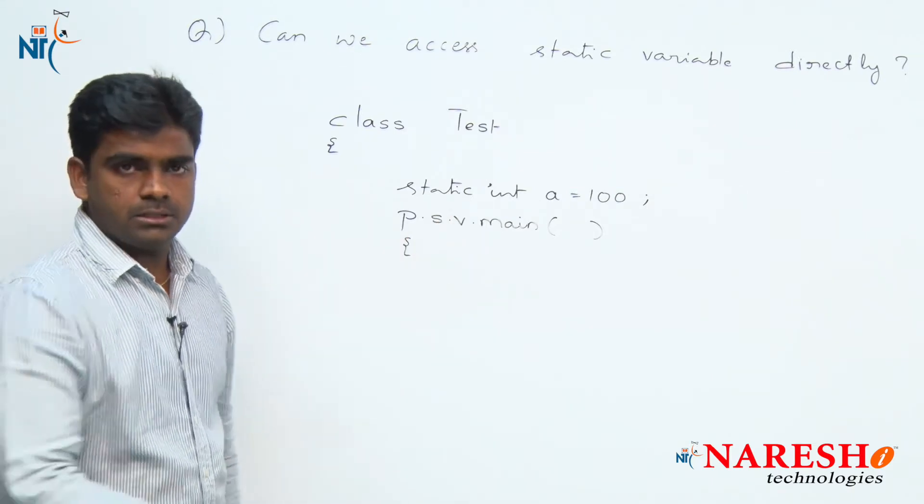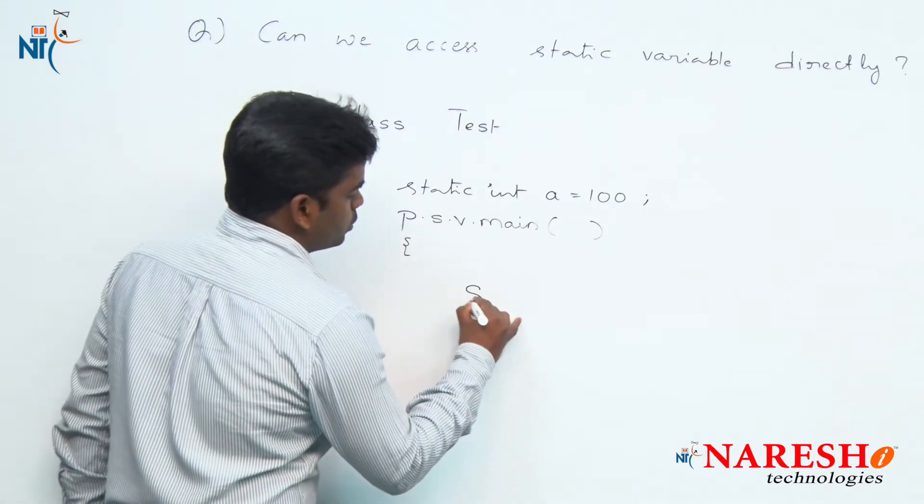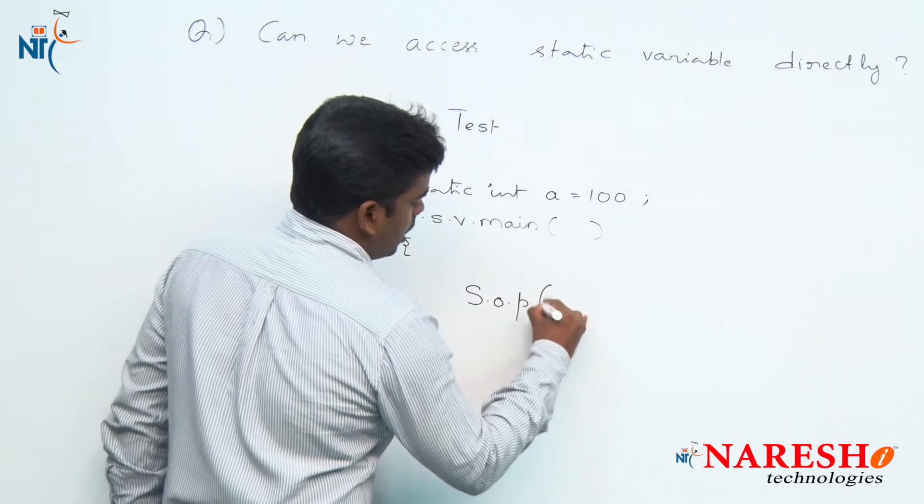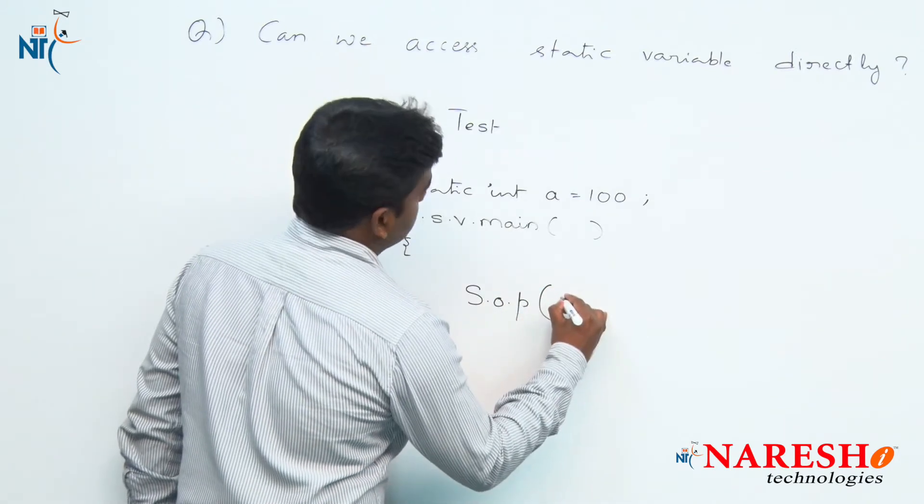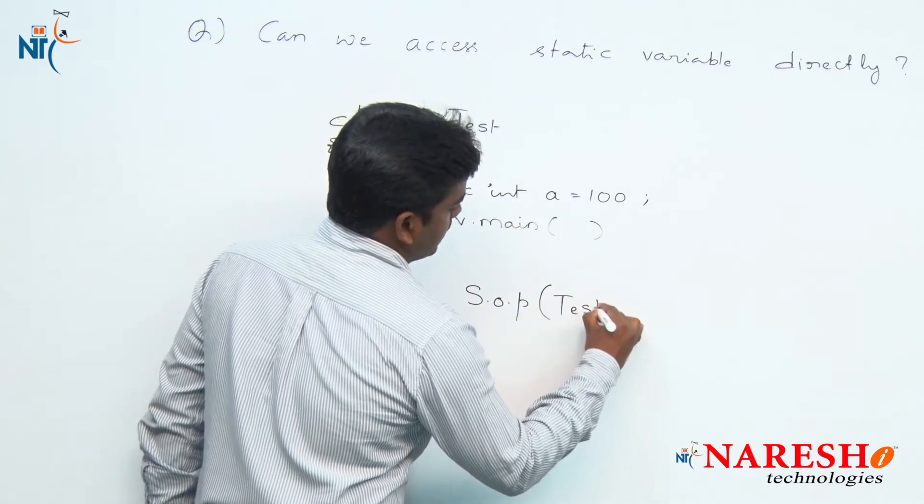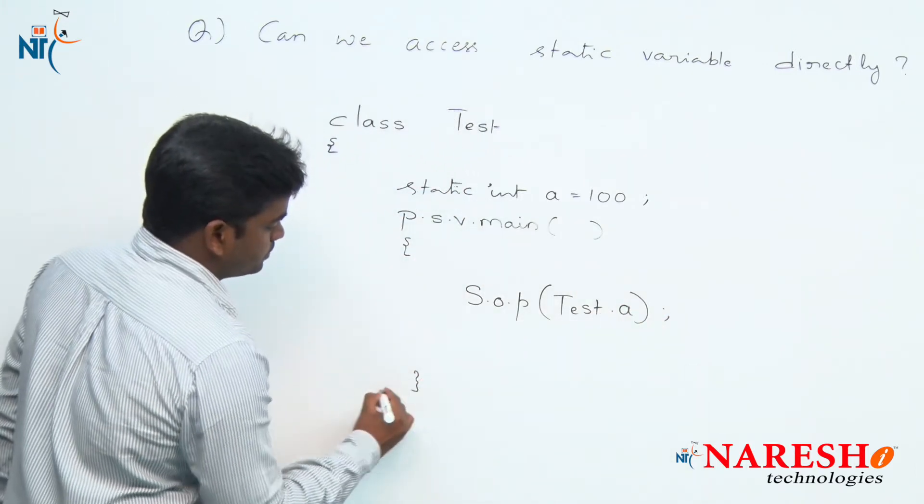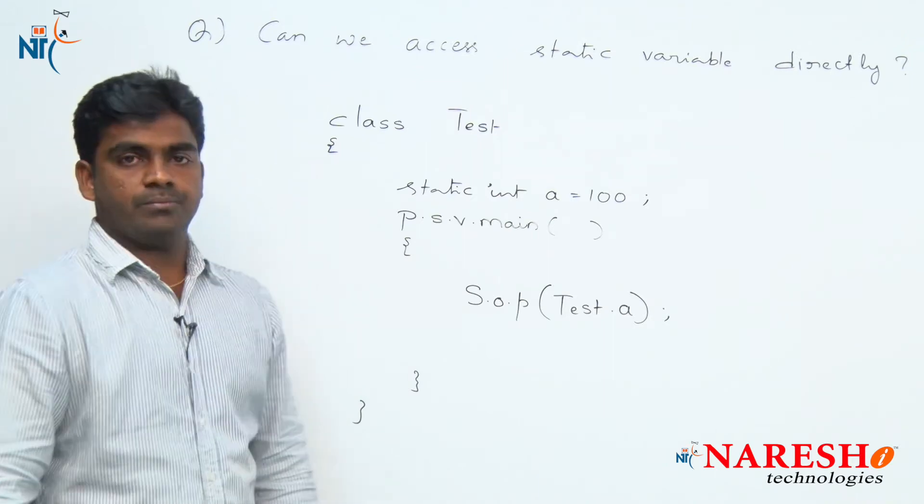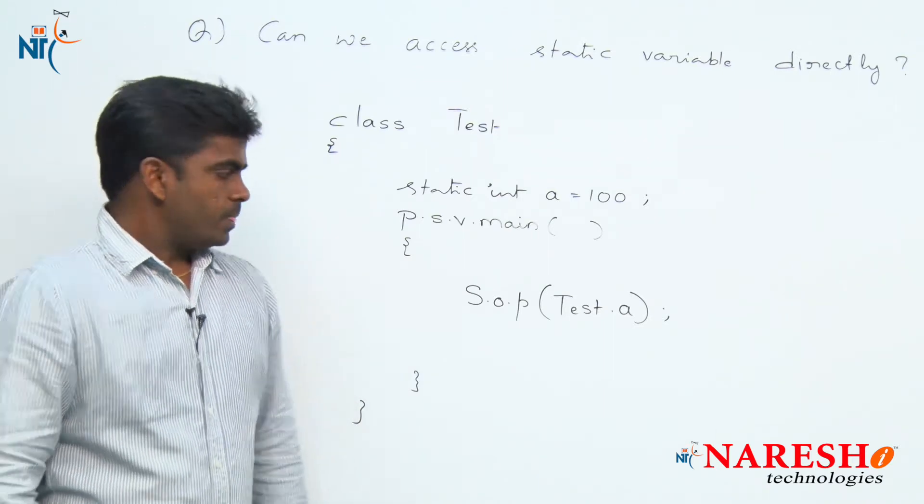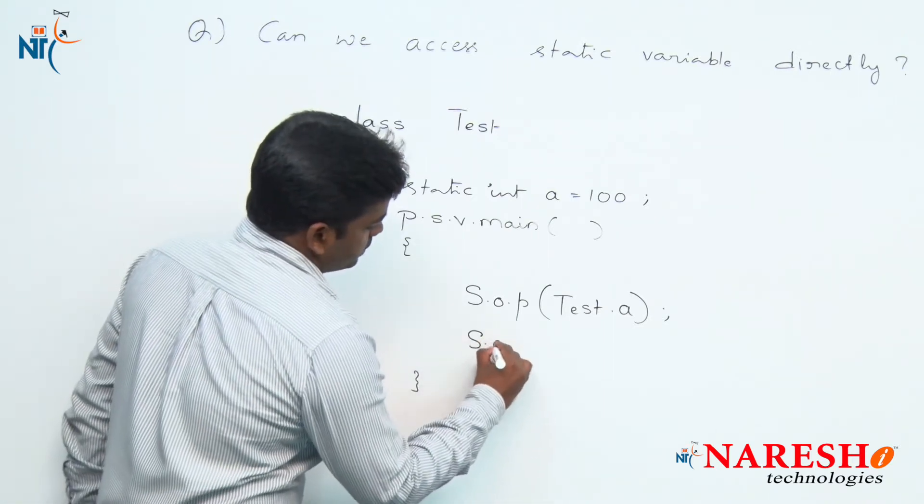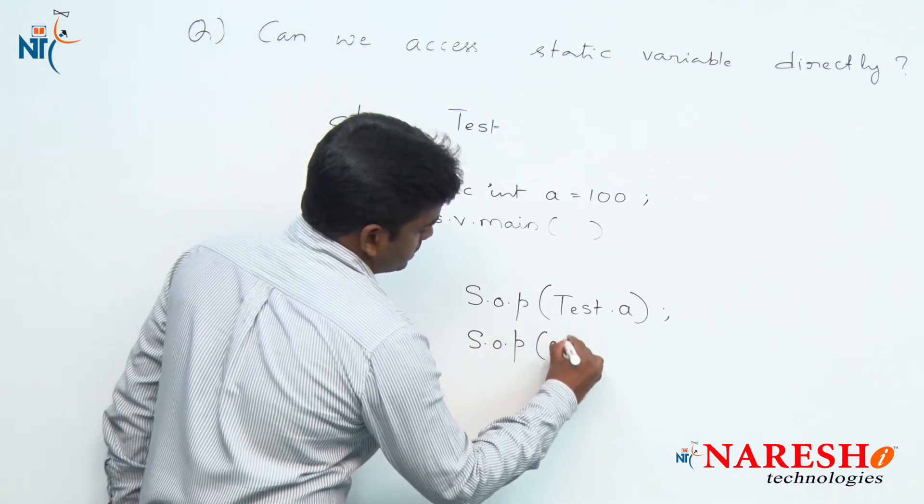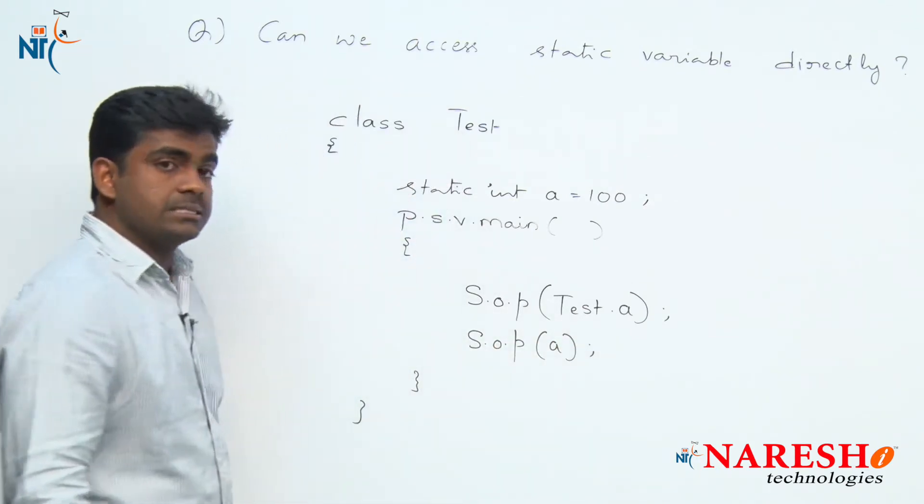Now, if you want to access following the rule: System.out.println(Test.a). We are accessing using class name. We know this will execute. But suppose if I try to access directly as 'a', will it print or not? Yes, it will print.